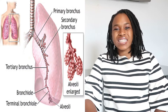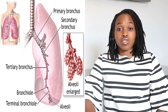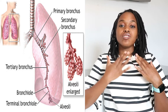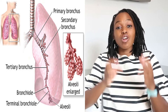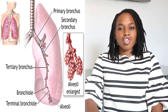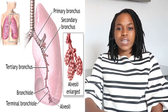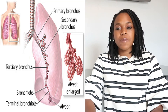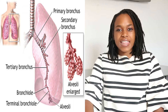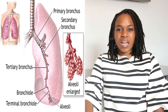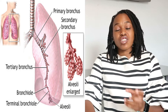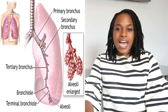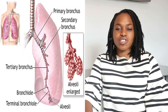Your lungs are a pair of spongy air-filled sacs situated in your chest, just above your heart. Inside they contain these long tubes that go all the way down and branch off into smaller tubes, with little sacs at the end that look like bunches of grapes. These tubes are known as your bronchials and the sacs are known as your alveoli.